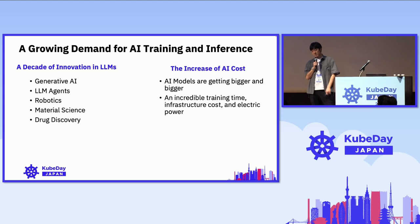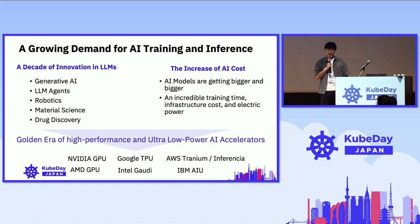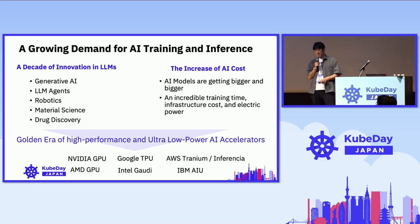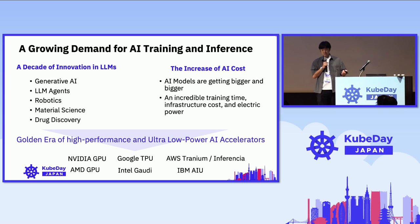That results in a lot of infrastructure costs and electric power consumption. So how do we deal with and address those problems? We have many solutions. It's now a golden era of building high-performance or ultra-low-power accelerators. GPU is now top-rated, but we have many vendors developing their own custom accelerators — Google TPUs, Intel Gaudis, AWS Trainium/Inferentia, and IBM is also building its own accelerator named AIU.